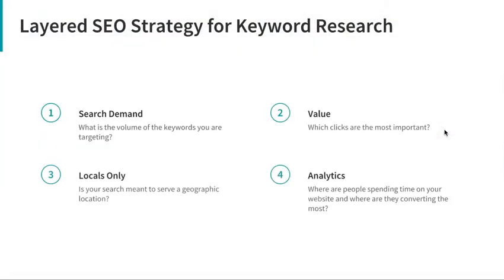We can look at the following things when trying to figure out what keywords to use. Search demand: what's the monthly volume of searches for a specific phrase or keyword on Google? We can find that out through a couple of tools. We might also want to look at geographic location — if I'm just serving Santa Barbara, I don't need to focus on keywords related to San Luis Obispo. The value of the keyword might also be important. I know that 'Santa Barbara notary' is my most important keyword phrase for my notary business, so I want to spend more time on it and use it more often on my site. Analytics can show me which ones are working well and which aren't, and I can prioritize from there.